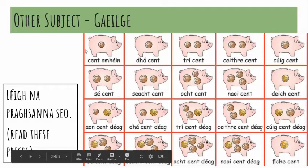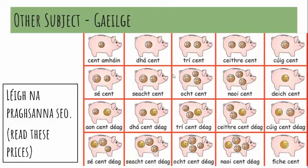I'm going to read one box and pause so you can repeat after me. So: aon cent, dhá cent, trí cent, ceathair cent, cúig cent, sé cent, seacht cent, ocht cent, naoi cent, deich cent. So that's from one to ten.